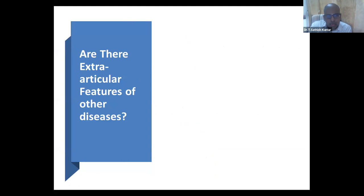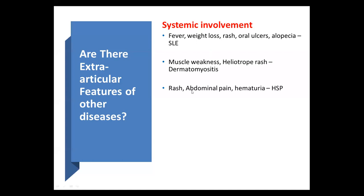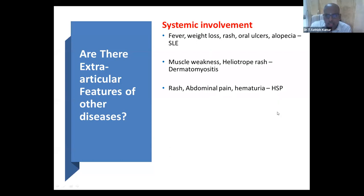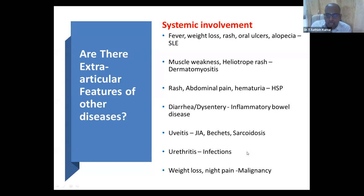When a patient comes with joint pain and arthritis, look into extra-articular manifestations — they give very important clues. If the child has fever, weight loss, rash, and oral ulcers — straightforward, think lupus. If the child has muscle weakness and heliotrope rash — dermatomyositis. Rash, abdominal pain, or hematuria — HSP (Henoch-Schönlein purpura). Diarrhea or dysentery with arthritis — think inflammatory bowel disease. Uveitis — think JIA, Behçet's, or sarcoidosis depending on the type. Urethritis with post-reactive arthritis. Weight loss, night pain, severe bone pain, the child screaming with pain — think malignancy.